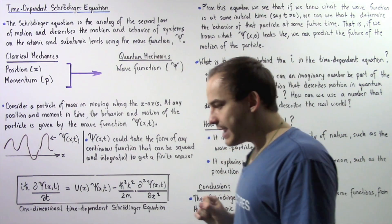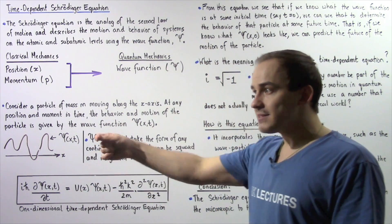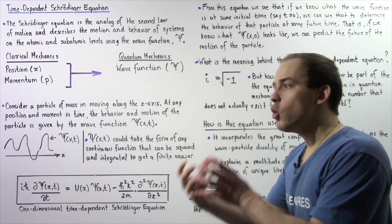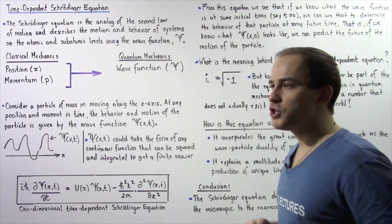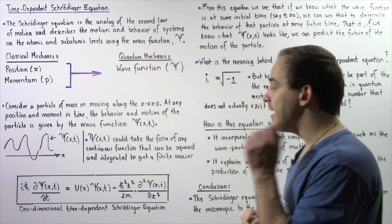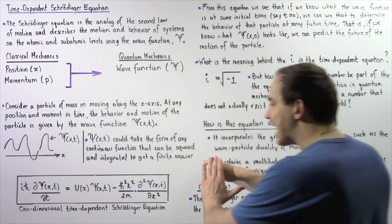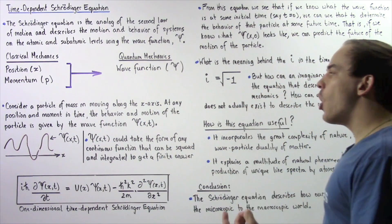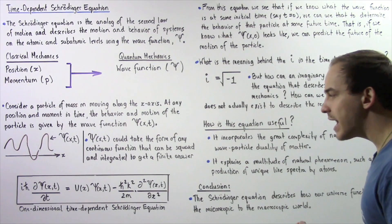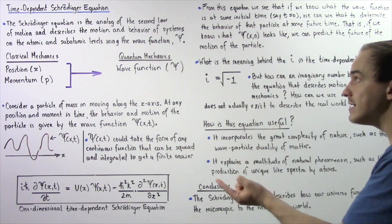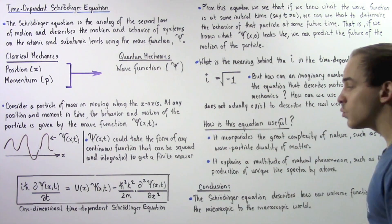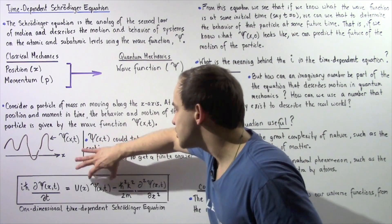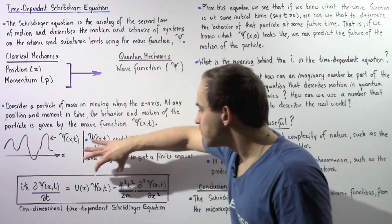So in the same exact way that force equals mass times acceleration describes the motion of an object in classical mechanics, in quantum mechanics this equation describes the motion of our object in the atomic and subatomic world using something known as the wave function.